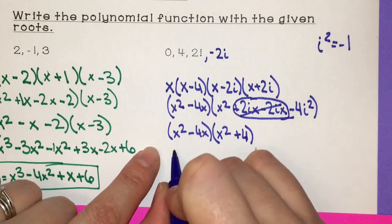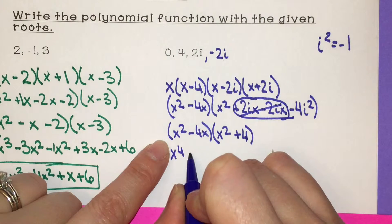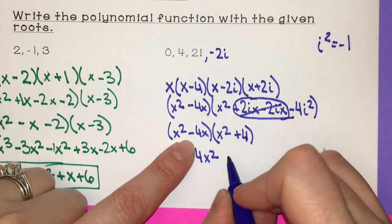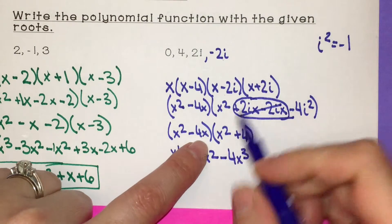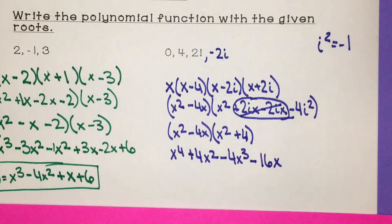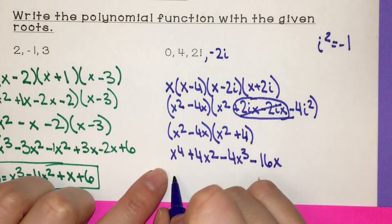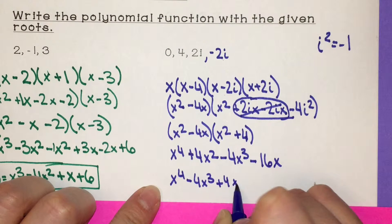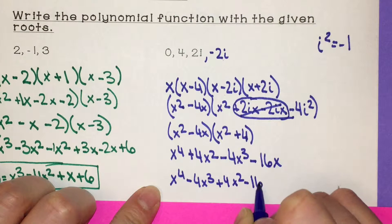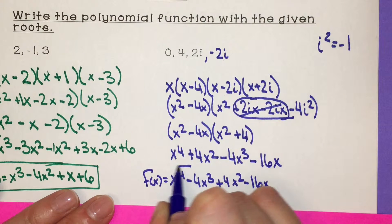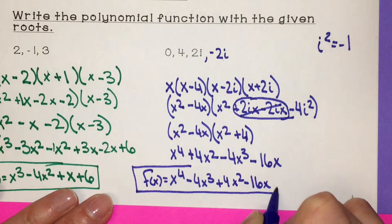Now multiplying x squared minus 4x by x squared plus 4: x squared times x squared is x to the 4th, x squared times 4 is positive 4x squared, negative 4x times x squared is negative 4x cubed, and negative 4x times 4 is negative 16x. Arranging in descending order: x to the 4th minus 4x cubed plus 4x squared minus 16x. So f of x equals that polynomial function.